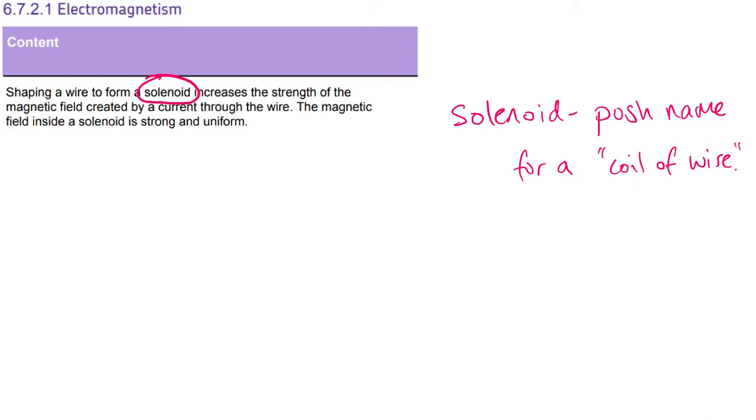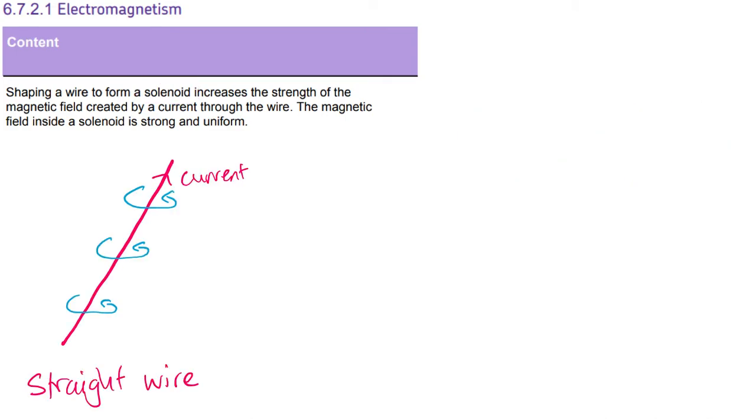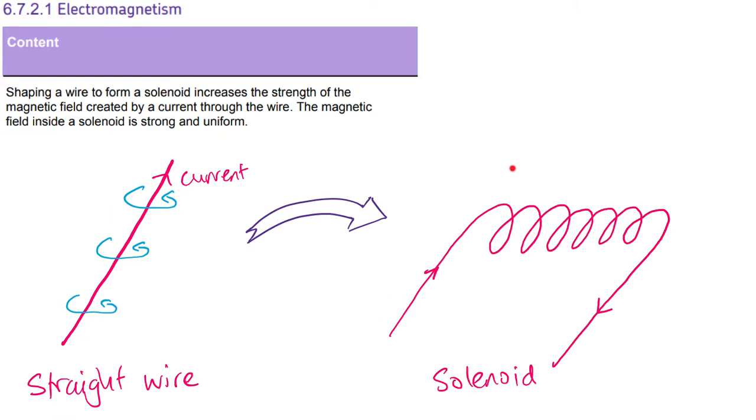Now, a solenoid is just a posh name for a coil of wire. So here is our original straight wire with our magnetic field all the way down. And now what we can do is turn it into lots and lots of loops. And we would call that a solenoid.